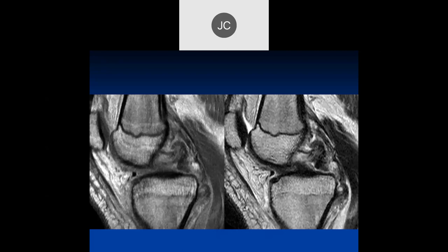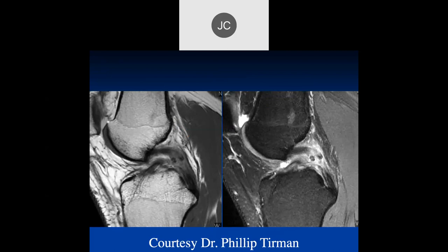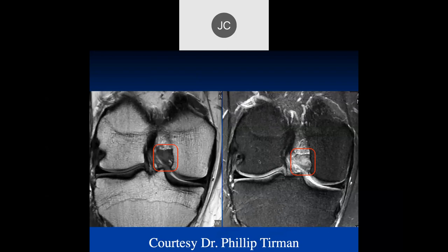That PCL looks completely torn and the femur is subluxed anteriorly. This looks like a complete tear of the mid-substance of the PCL with anterior subluxation of the femur.